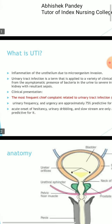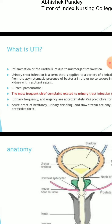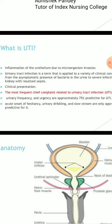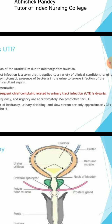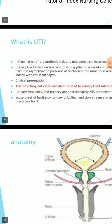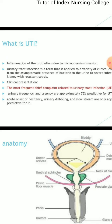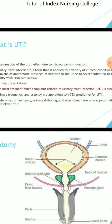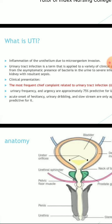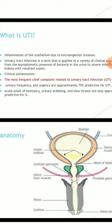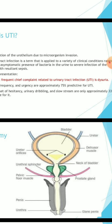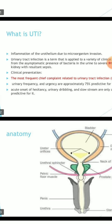Clinical presentation: The most frequent chief complaint related to urinary tract infection is dysuria. Urinary frequency and urgency are approximately 75% predictive for UTI. Acute onset of hesitancy, urinary dribbling, and slow stream are approximately 33% predictive for it.